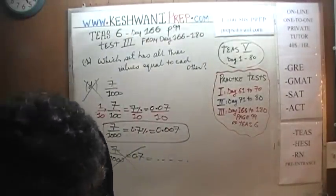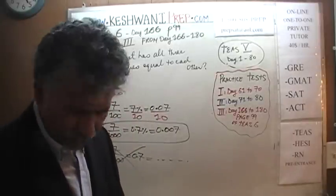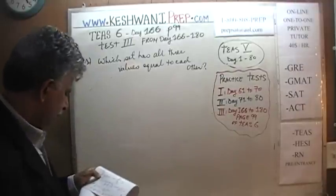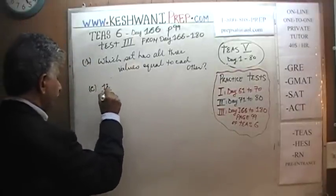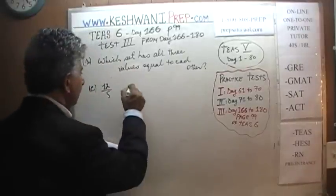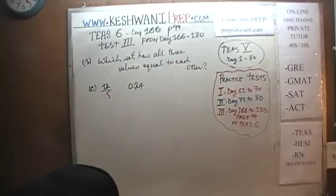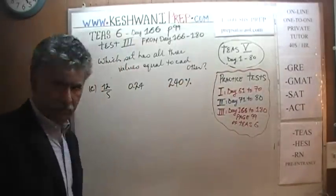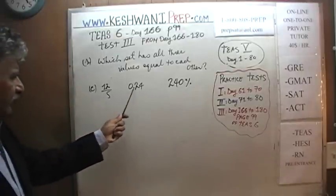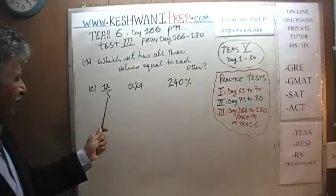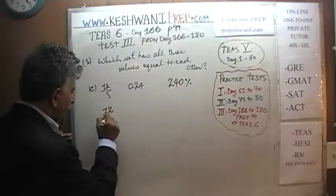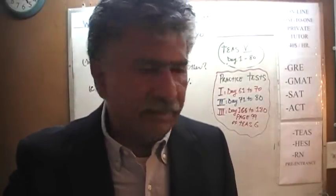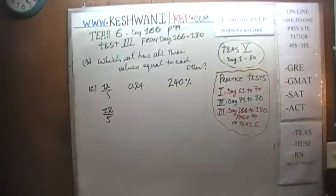Let's look at answer choice C. We have 12 over 5, then 0.24, and then 240%. In order to express 12 over 5 in percentage form, if we can get 100 at the bottom, any fraction with 100 at the bottom is expressed as a percentage. We need to convert 12 out of 5 into a quantity out of 100.